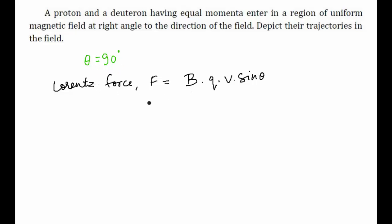Since theta equals 90 degrees, the Lorentz force is F = B·q·v. The particles will move in a circular path.